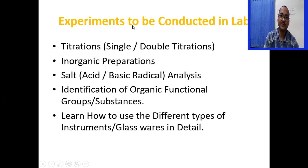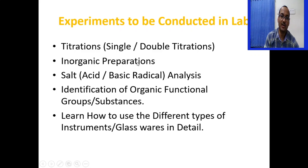Students will carry out single or double titration inside the chemistry lab. In single titration, one acid is titrated against one base. In double titration, one acid is titrated against two bases, or one base is titrated against two acids, requiring two titrations. Students will also prepare inorganic compounds like Mohr's salt and potassium compounds, carry out salt analysis for acid radicals and basic radicals, identify organic functional groups, and learn different types of instruments and glasswares in detail.